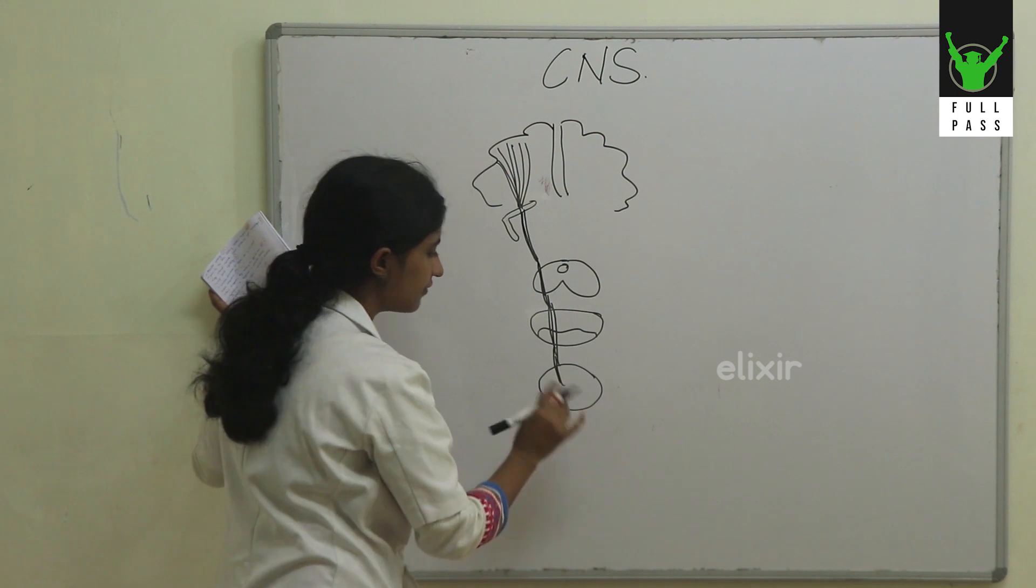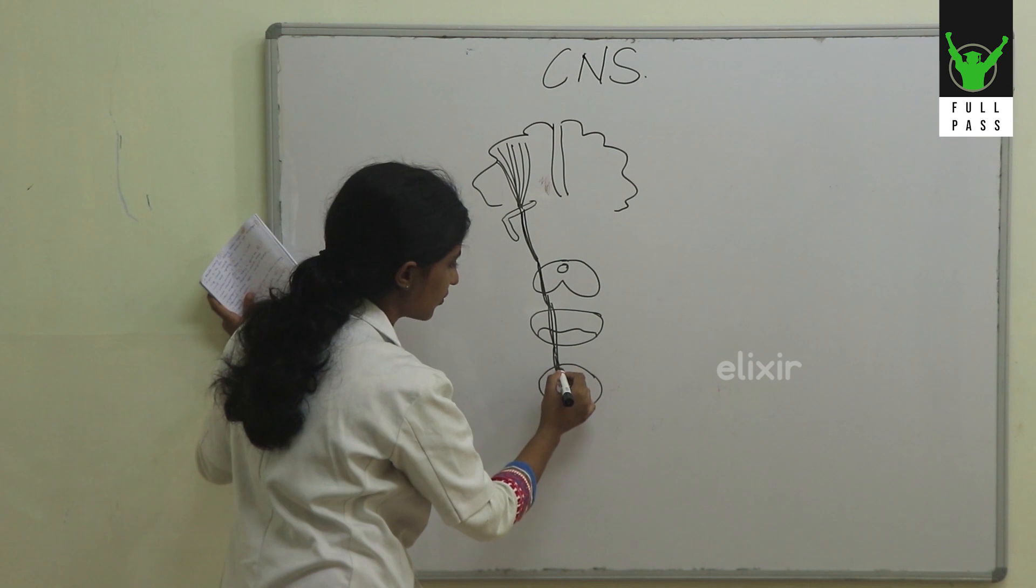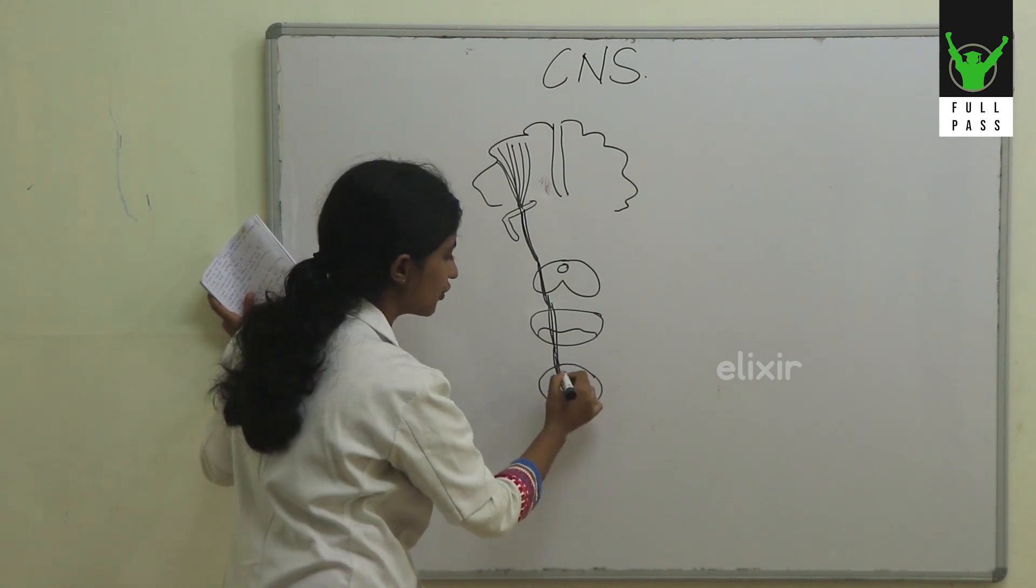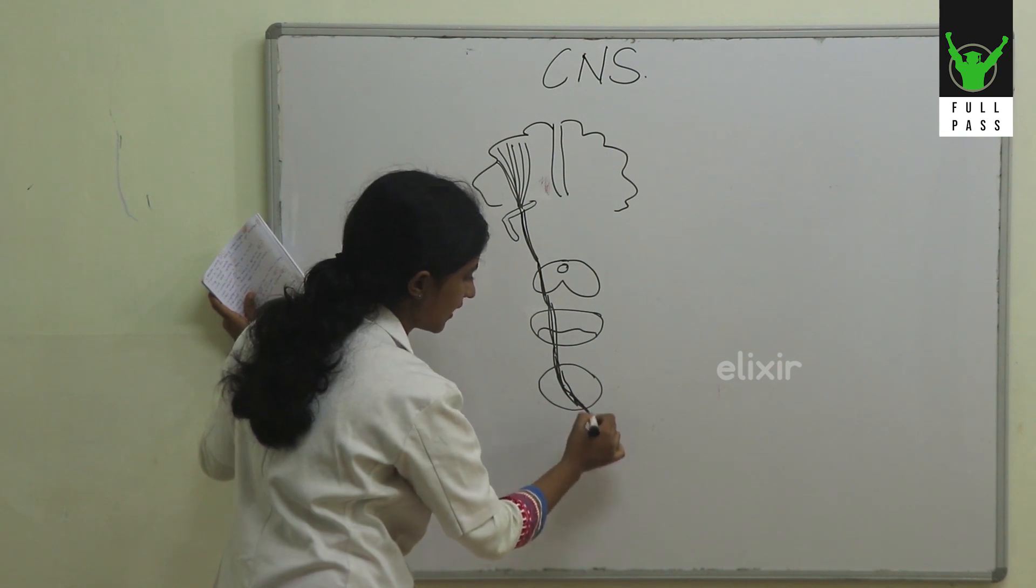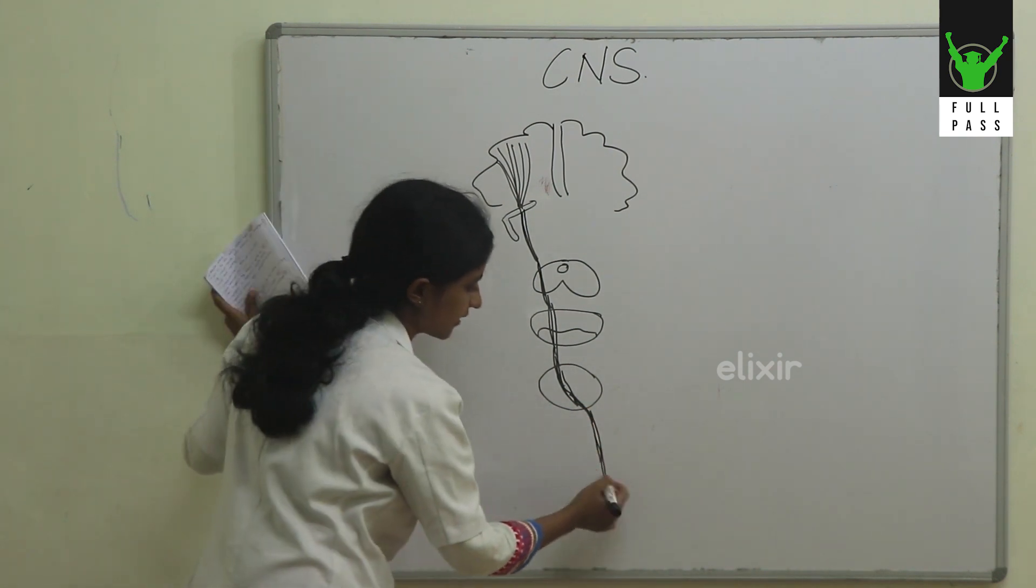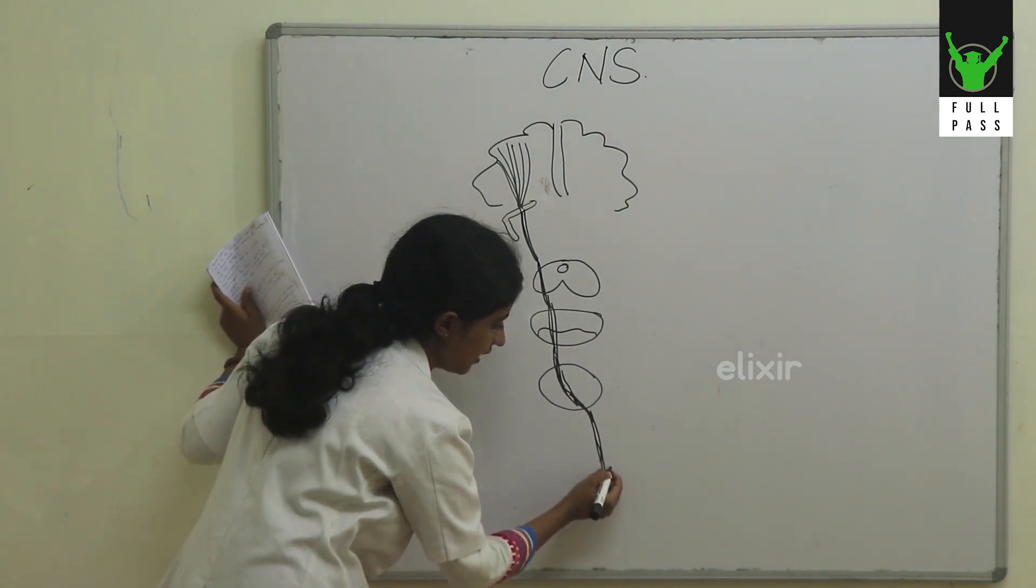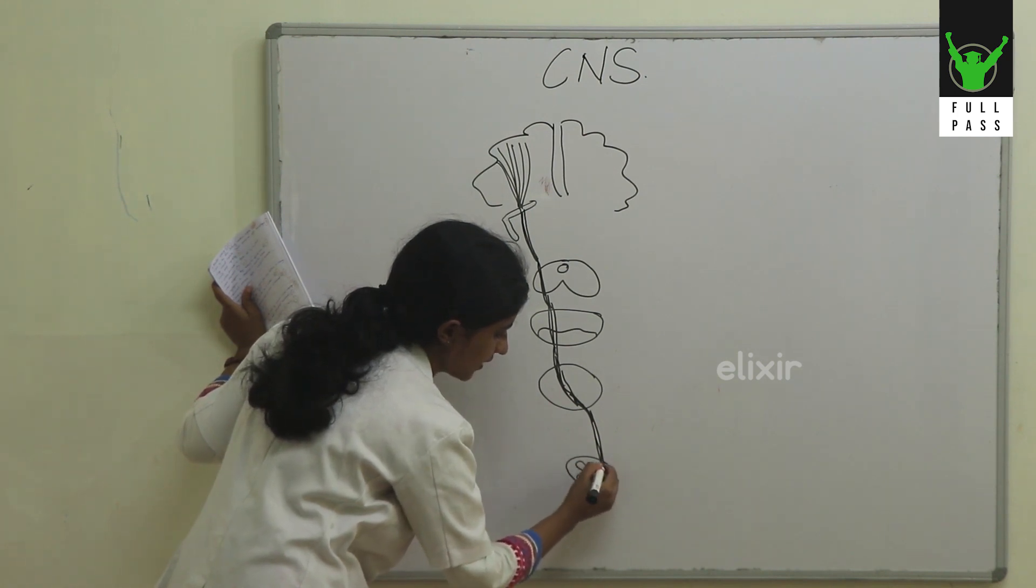In the medulla, we have something known as the pyramidal decussation where most of the fibers of the corticospinal tract cross over, and then they descend down as the lateral corticospinal tract. They reach each level of spinal cord and end in the anterior horn of the spinal cord.